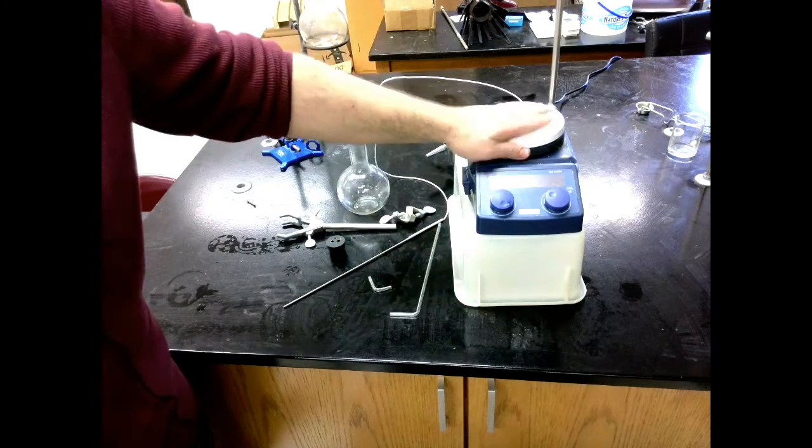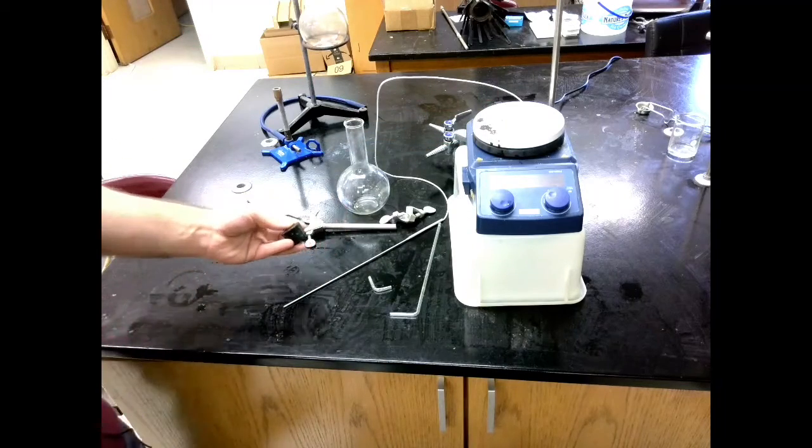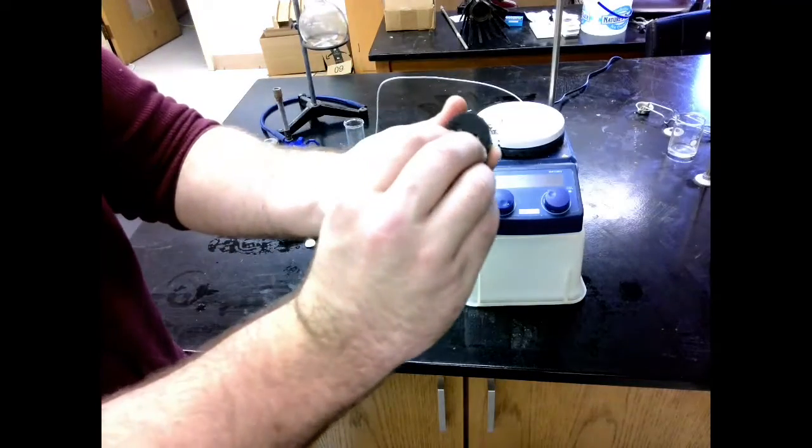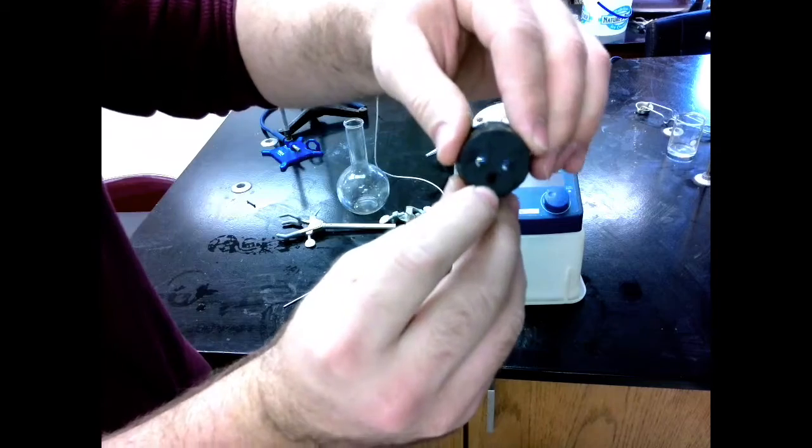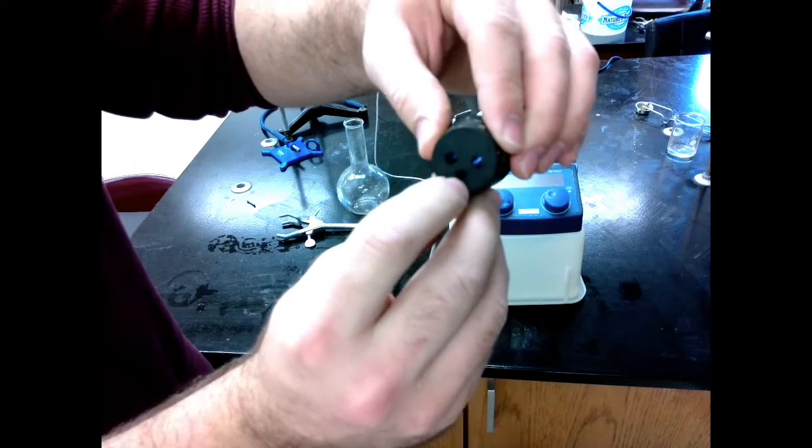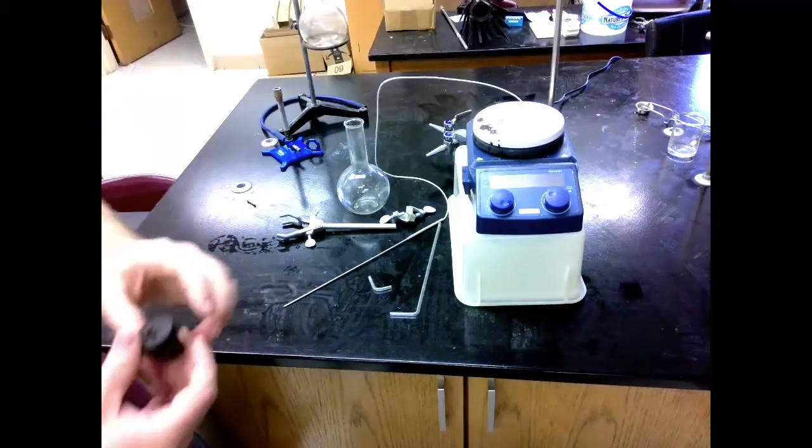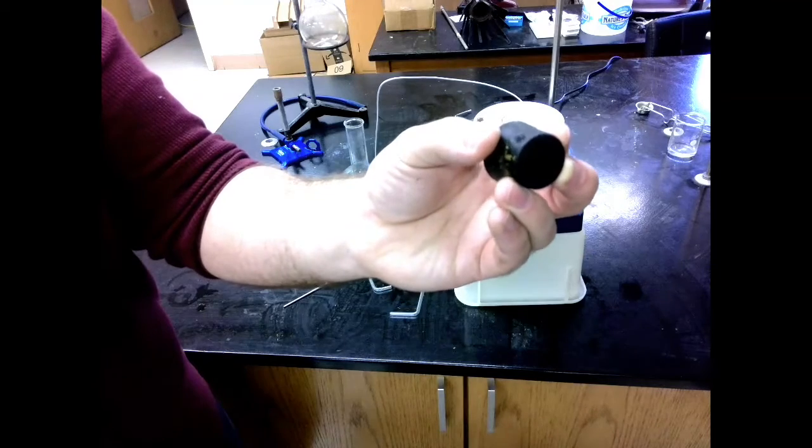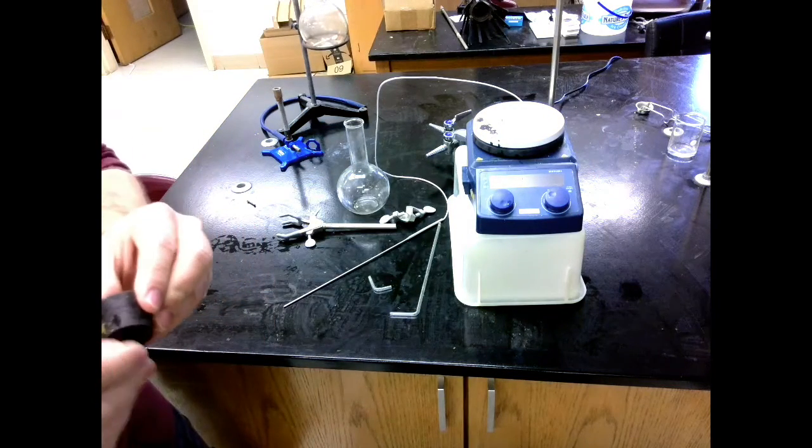This rubber stopper is a little different than the other one. You can see it has two holes here, and then it's got a third hole that's been cut into it to make room for our temperature probe. If you can't find one of these that has this third line cut in it, let me know and I will cut one for you. Just continue setting up the rest of the lab while you're waiting for me.